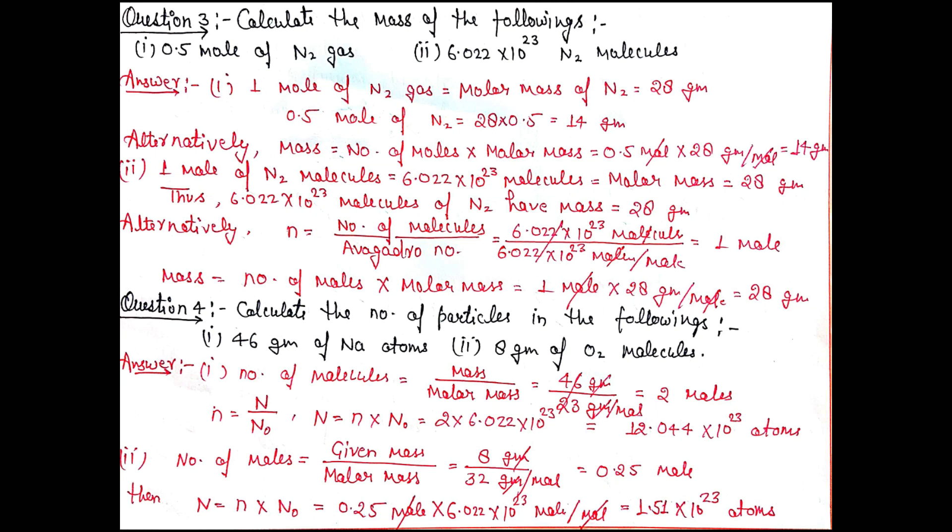Alternatively, we can calculate using the formula: mass equals number of moles multiplied by molecular or molar mass. Part 2: One mole of nitrogen molecule equals 6.022 × 10^23 molecules with molar mass 28 grams. This is the answer, or alternatively we can calculate it with the help of the given formula.